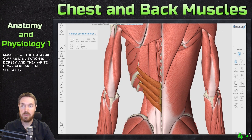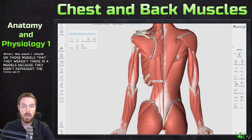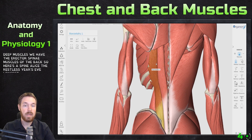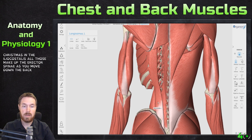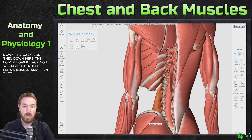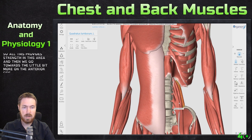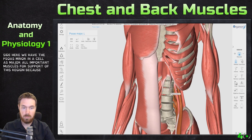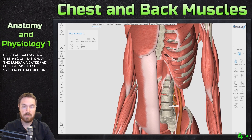Right here we have the latissimus dorsi, and down here are the serratus posterior muscles. Now what we didn't show on those models — because they didn't represent the deep muscles — we have the erector spinae muscles of the back: the spinalis thoracis, the longissimus, and the iliocostalis, all making up the erector spinae. In the lower back we have the multifidus muscle, and right here is the quadratus lumborum. Moving toward the anterior side, we have the psoas minor and the psoas major — all important muscles for support of this region.